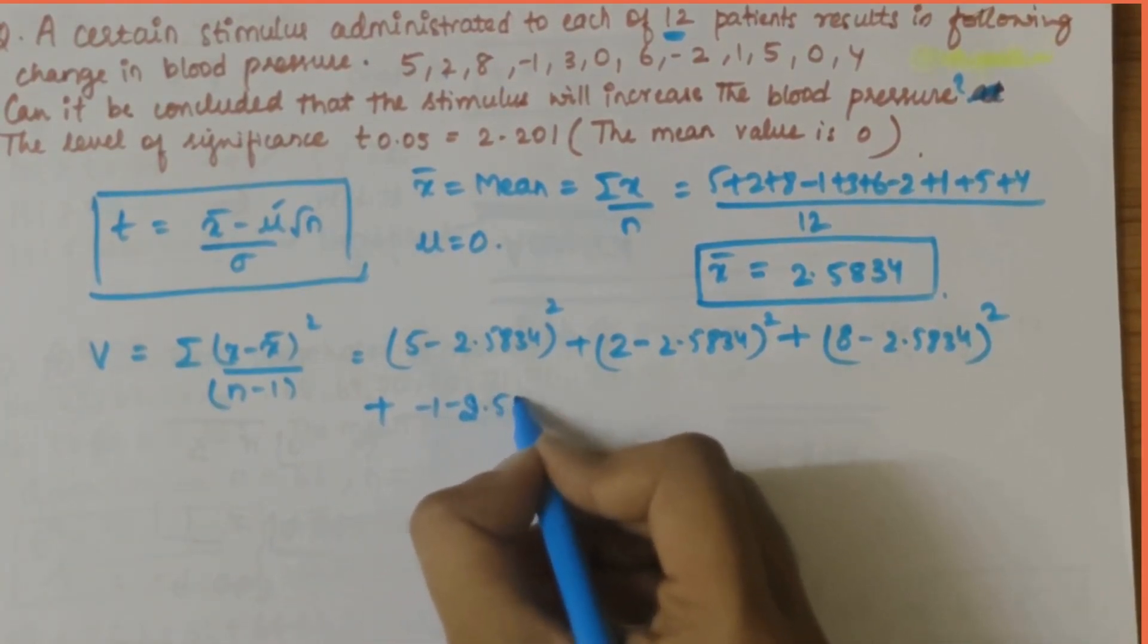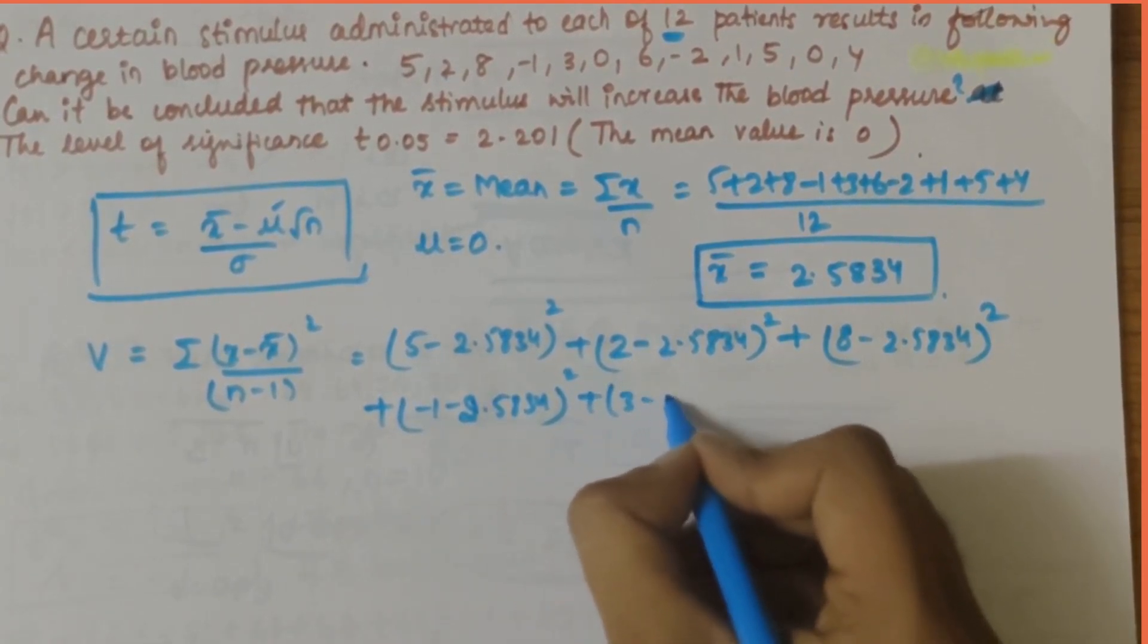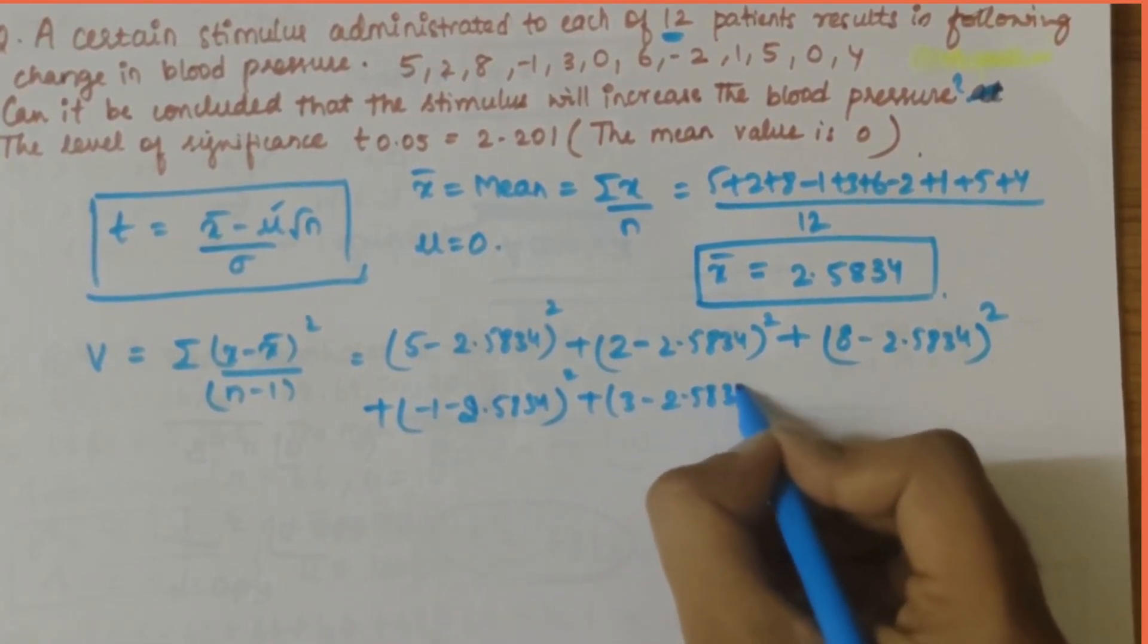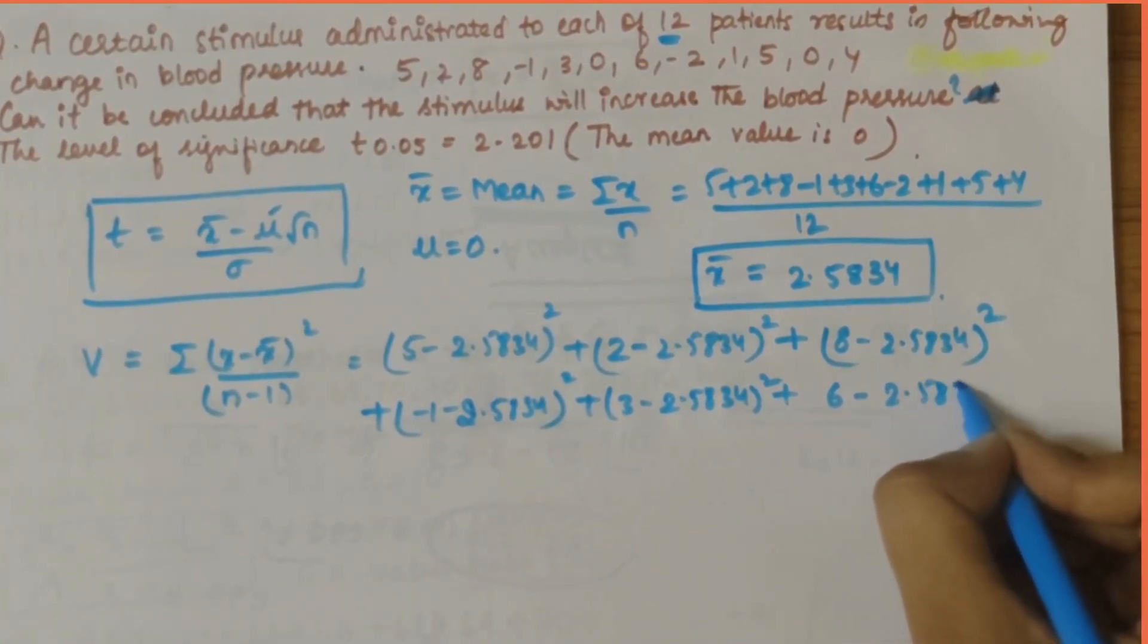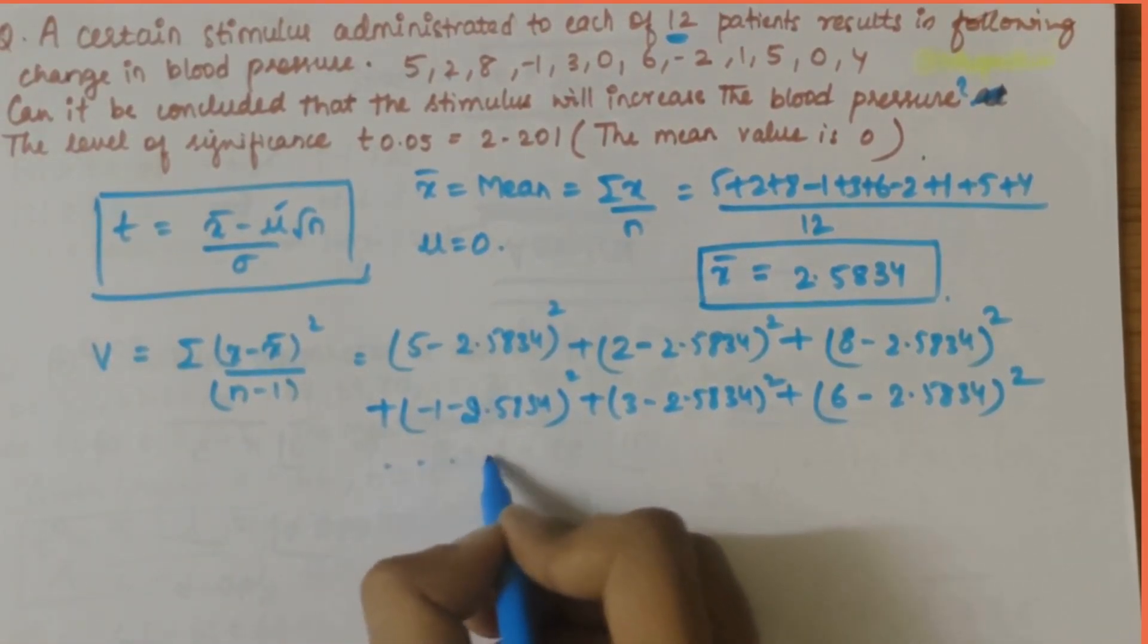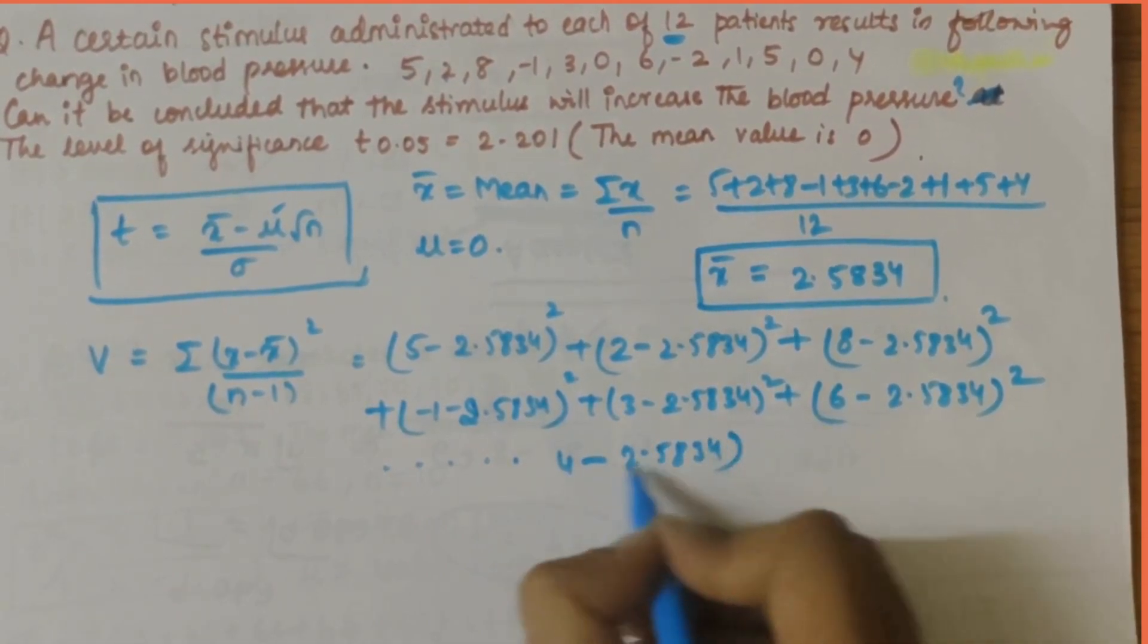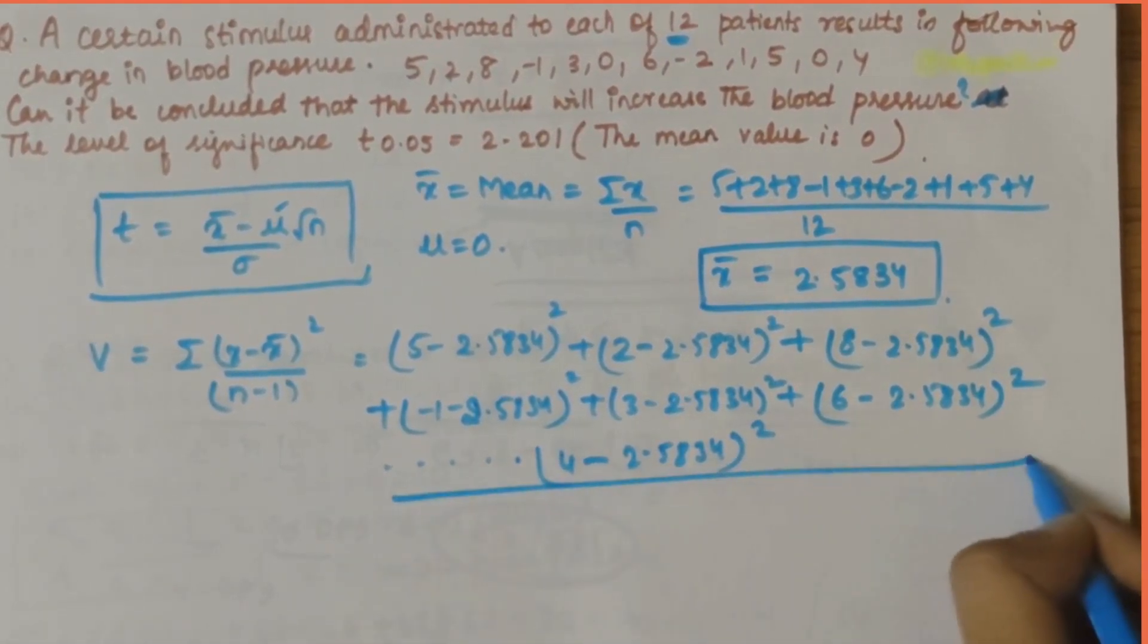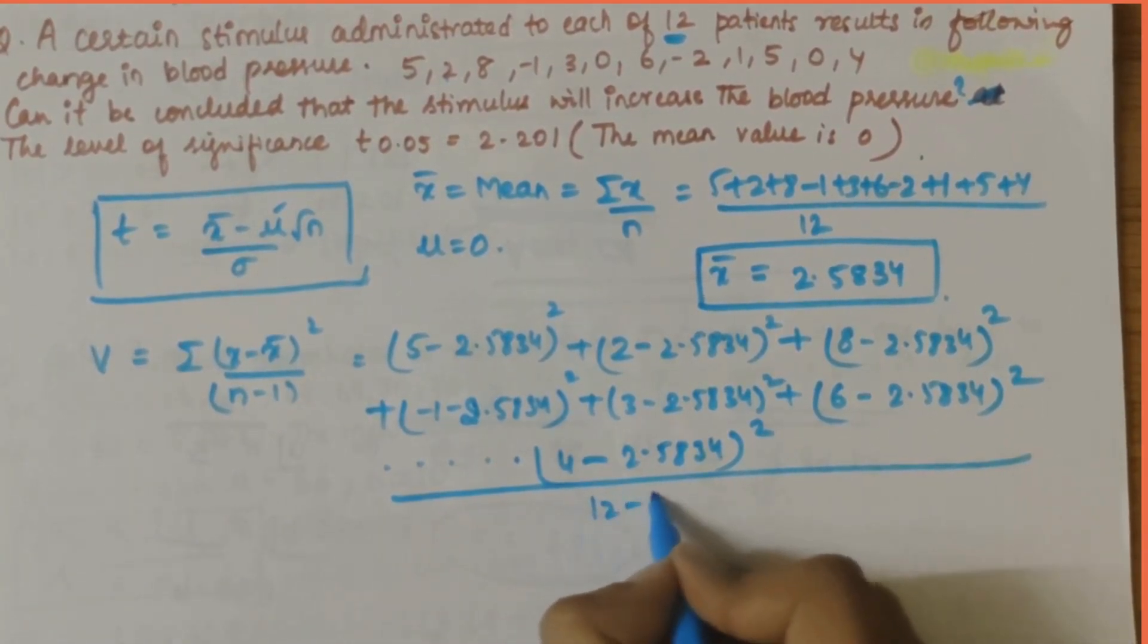Plus 2.5834 whole square plus 6 minus 2.5834 whole square, and so on till 4 minus 2.5834 whole square, totally divided by n value is 12, so 12 minus 1, that is 11.